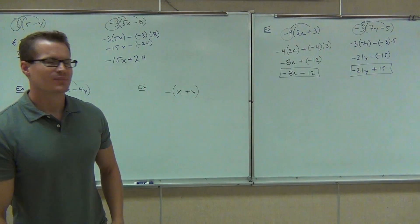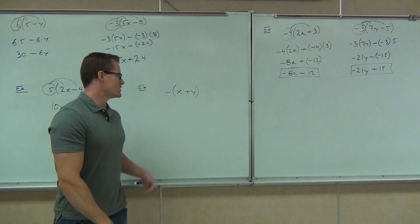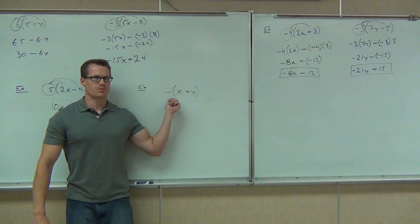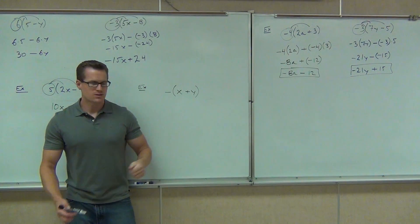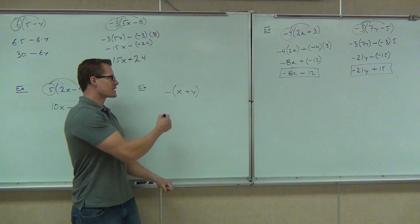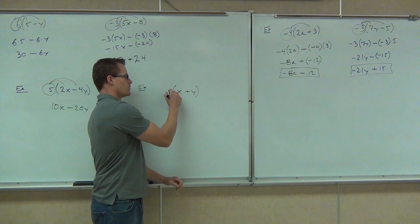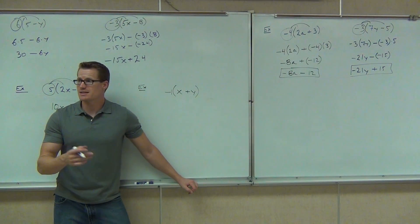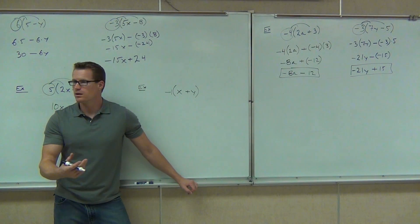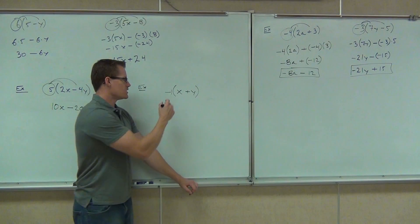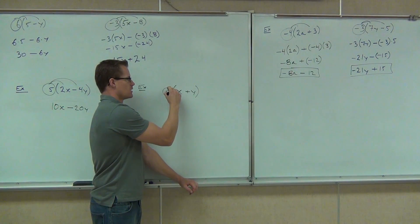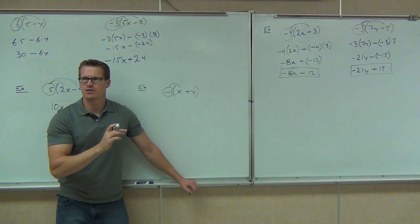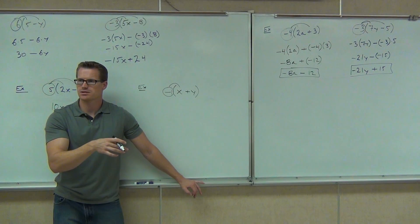Can you tell me something? Whenever you have a negative like this, what numbers imply it to be there? So if you have a negative 1, that's really what we're distributing — a negative 1. If we distribute negative 1, let's watch what happens here. Negative 1 times x — how much is negative 1 times x, please?